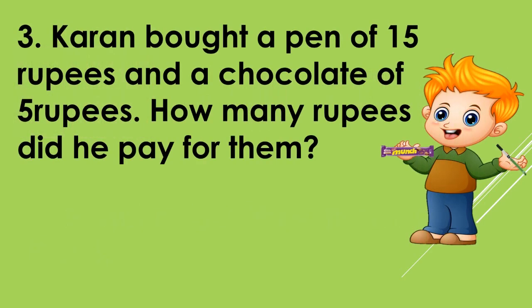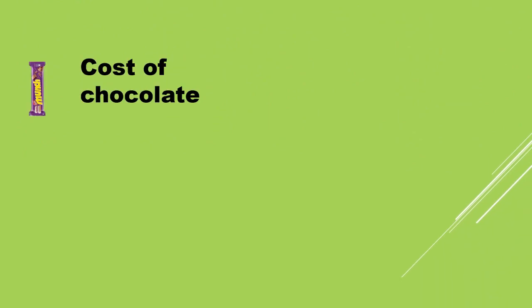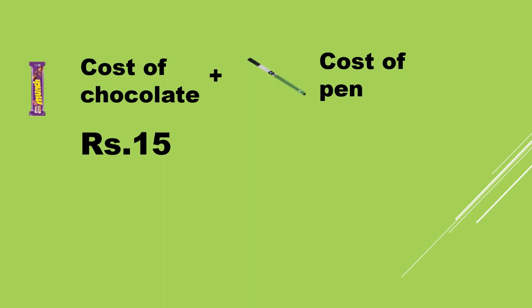Karan bought a pen of Rs. 15 and a chocolate of Rs. 5. How much did he pay in total? Karan paid the cost of chocolate plus the cost of the pen: Rs. 15 + Rs. 5 = Rs. 20. So Karan paid Rs. 20 in total.